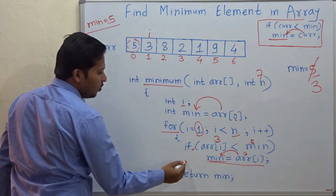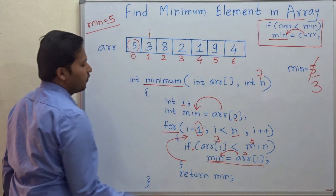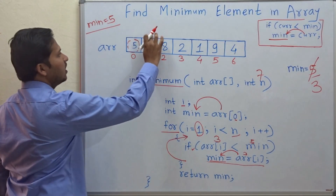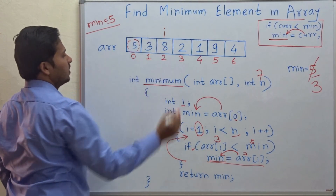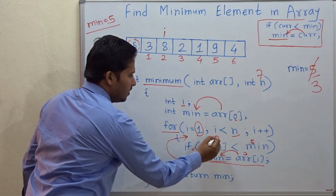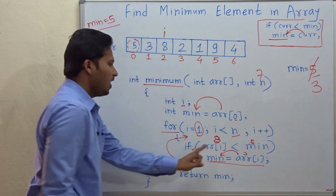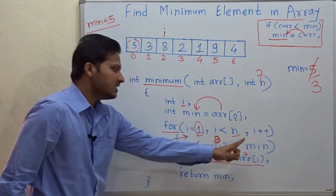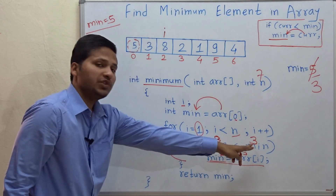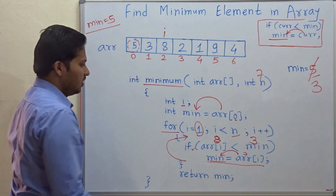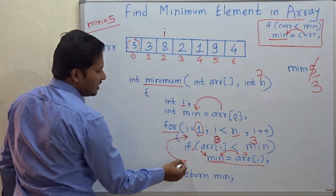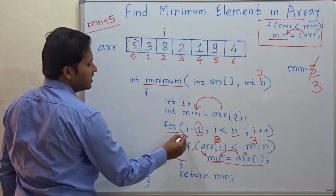We go to the next iteration of the for loop. i++ means i will become 2 now. We check whether array of i, that is 8, is less than minimum — now minimum is 3. Whether 8 is less than 3 — no, it is not. So we don't go inside this if condition and directly go to the next iteration.